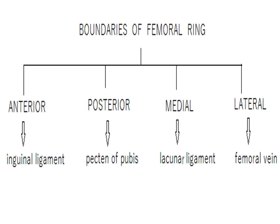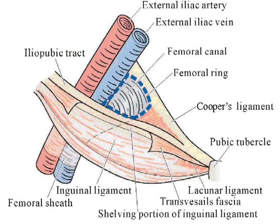The boundaries of the femoral ring: it has four boundaries. The anterior wall is formed by the inguinal ligament. Posteriorly, there is the pecten pubis. Medially, there is the lacunar ligament, and laterally there is the femoral vein.